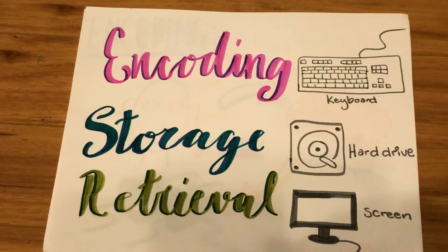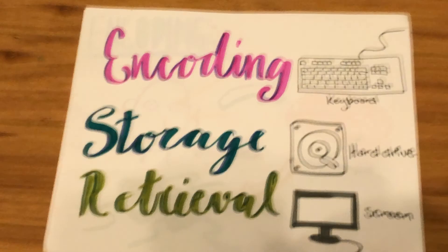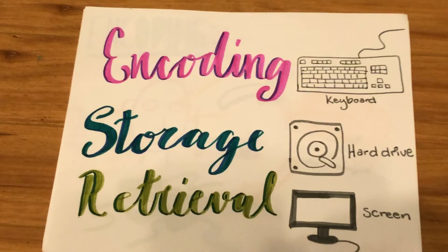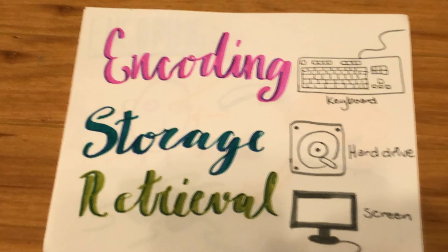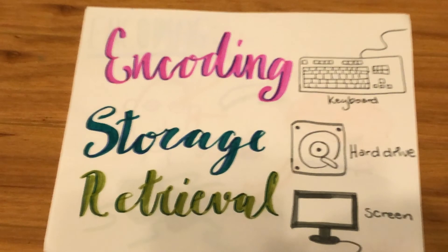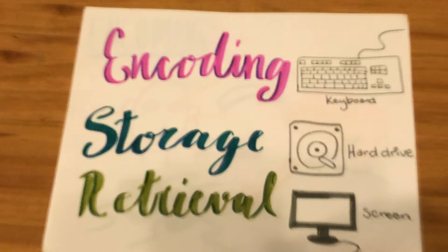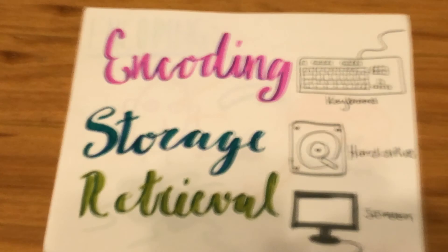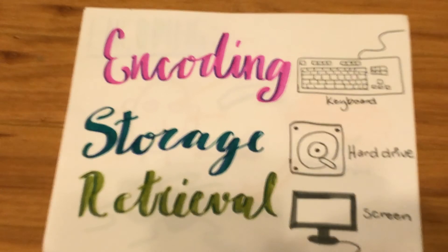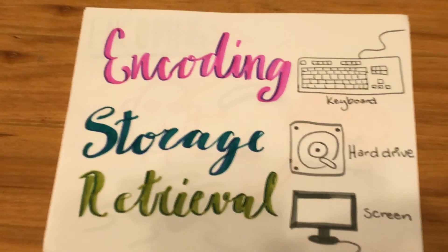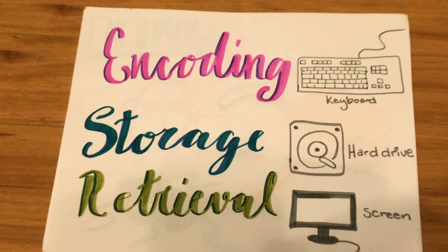An analogy for this process would be the computer. You use the keyboard to type and encode information, just like your brain encodes sensory input. This information is stored in the computer's hard drive, as incoming information is stored in your brain. Then this information can be retrieved by displaying it on the screen, like when you recall stored memories.